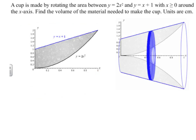A cup is made by rotating the area between 2x² and x + 1 around the x-axis. Find the volume of the material needed. You can see the original function and its rotation. What's different now is that the cylinder — dx is still the height — but when you look at it head-on, instead of a circle it looks like a donut or a washer. We've got a big circle with another circle inside it. The big circle has a radius of big R and the little circle has a radius of little r.